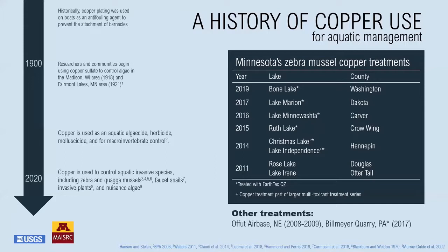Earth Tech was also used in an eradication effort in Nebraska at Offutt Air Force Base; results were mixed — it did kill mussels but caused significant fish mortality. There was also a treatment in a 12-hectare lake in Pennsylvania in 2017 where Earth Tech reportedly eradicated all mussels from a quarry. It was applied three times over 37 days at about half the maximum label rate, around 0.04 mg/L. Time will tell whether this was a complete eradication with long-term monitoring.